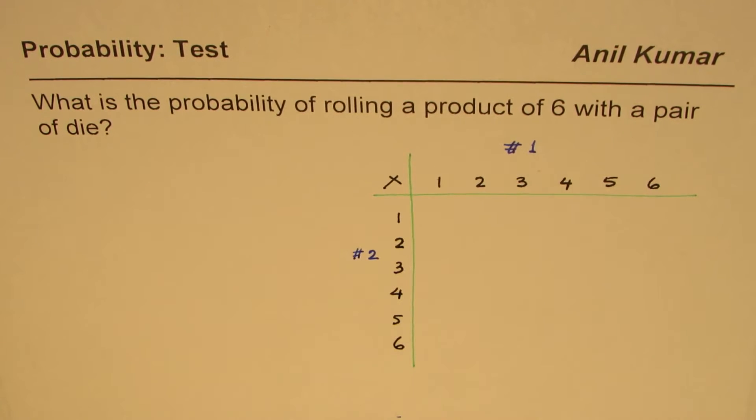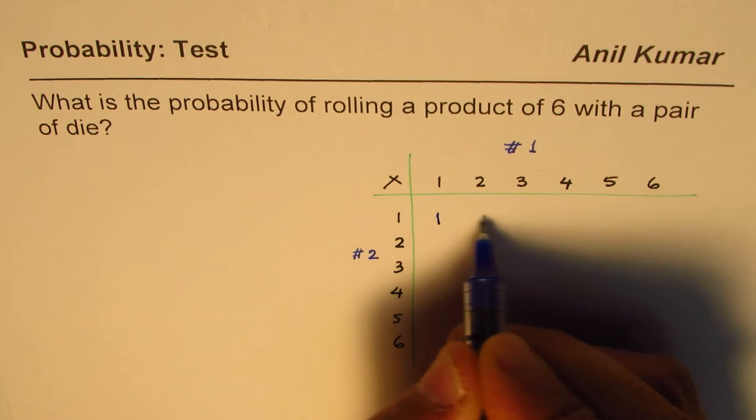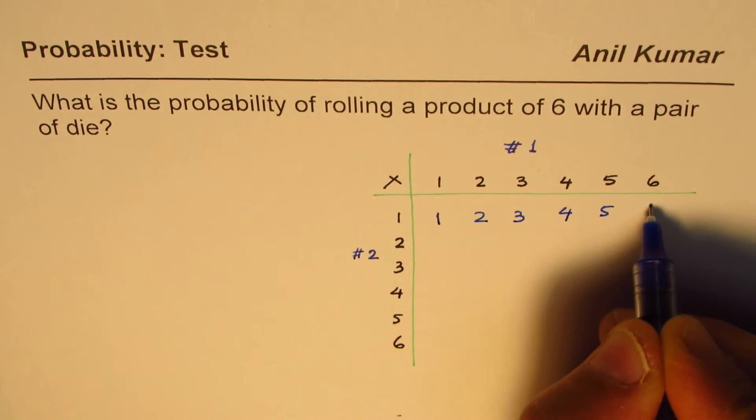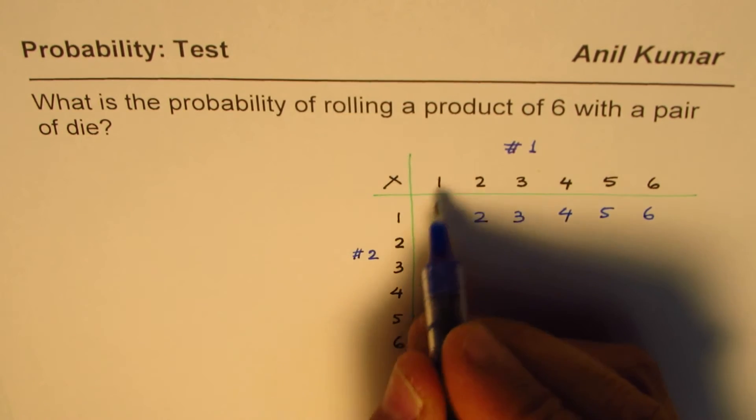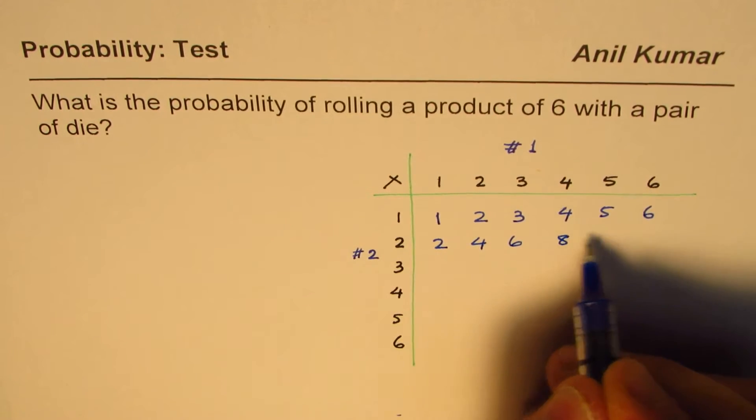Let me write down all the products, and then we'll circle the ones which are products of 6 or multiples of 6. So 1 times 1 is 1, and 1 times 2... this row will have numbers like 1, 2, 3, 4, 5, 6. We are doing times 2 times 1, so we'll double this number now: 2, 4, 6, 8, 10, and 12.